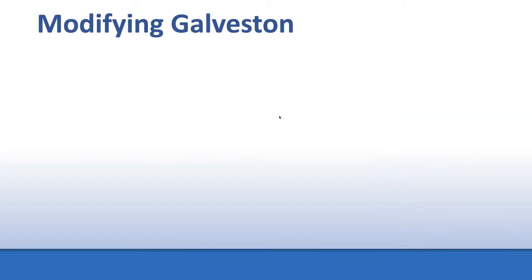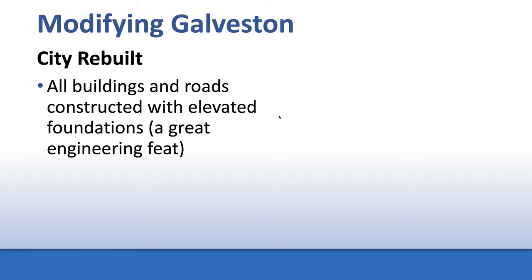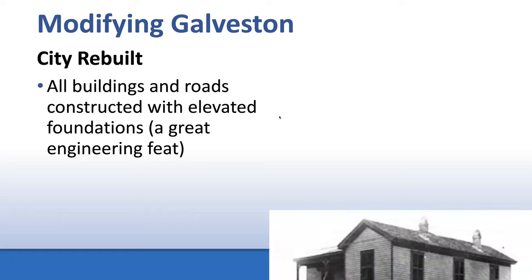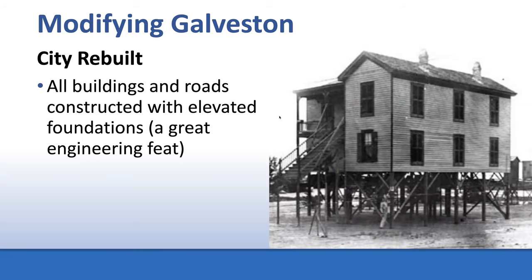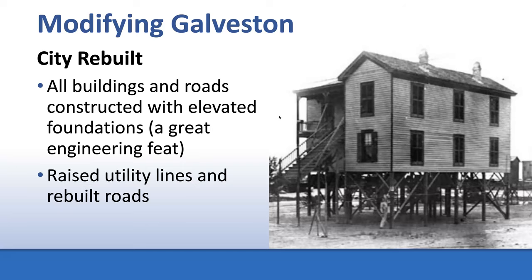The people of Galveston realized they could not survive another hurricane of that nature without modifying the city. The first thing they did was rebuild with all buildings and roads constructed on elevated foundations — a great engineering feat at the time. Houses were built way off the ground, and utility lines and roads were rebuilt.